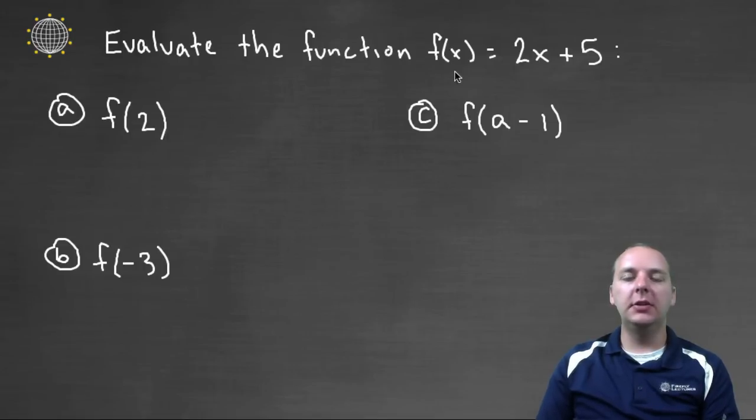So if your function is expressed as f of x equals, let's say, two x plus five, then to evaluate it what that means is they want you to take this x value out and all the x values in your function and replace them with a certain number or letter or something like that, usually a number.